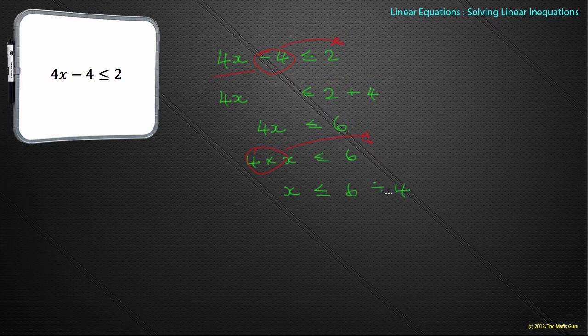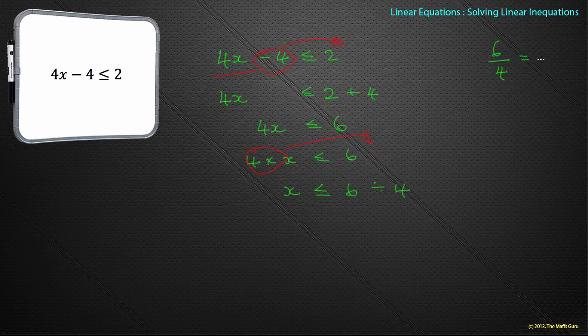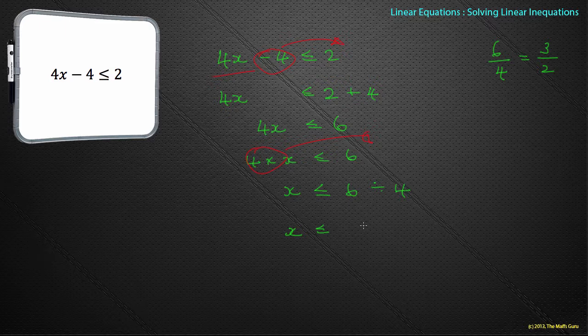x is less than or equal to 6 divided by 4. Now 6 divided by 4, let's just think of this as 6 divided by 4 can be written as 6 over 4, and I imagine everyone now knows that can be written as 3 over 2. Would I write it as 1.5? You could do. It very much depends on the question. So x is less than or equal to 3 over 2, or if you want 1.5.